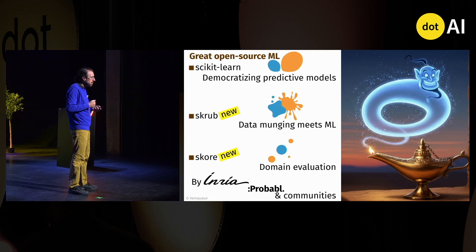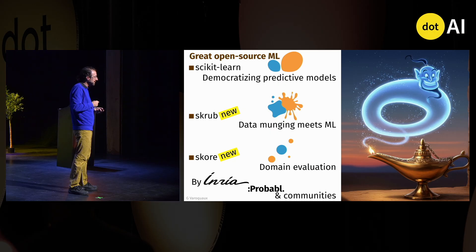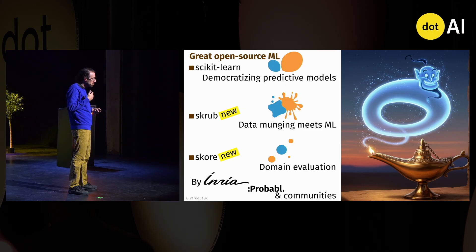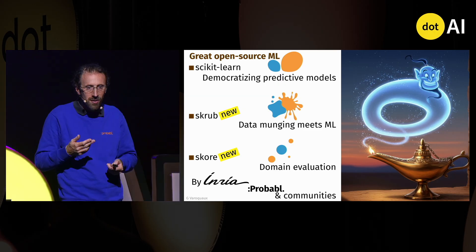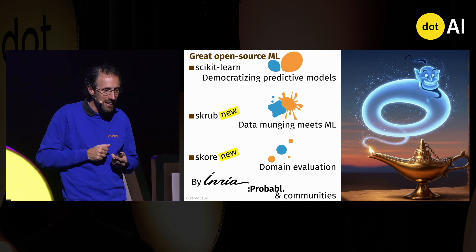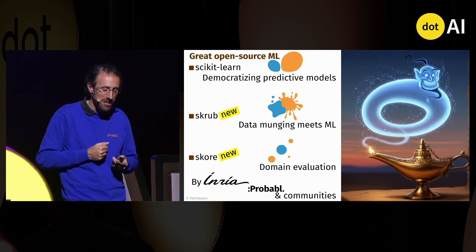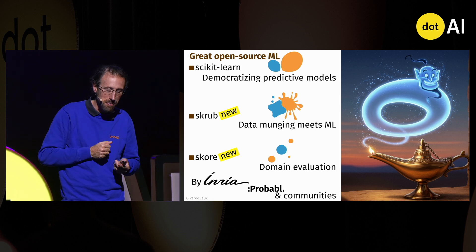We're busy building great open-source machine learning. There's scikit-learn and all the other toolkits you know and love, and we're creating new things: Skrub and Score. This is done by INRIA and Probabl, where I work — mostly French taxpayer money.